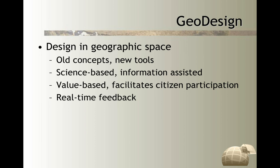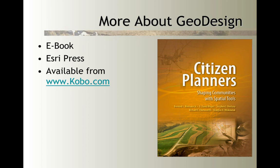With the use of geographic information systems and geodesign concepts, we can run different alternatives and see if it's even possible to protect farmland while adding 5,000 new citizens over the next 20 years with low-density scenarios. These geodesign tools are really good at providing real-time feedback to understand the consequences of decisions before they're actually implemented into ordinances on the landscape. I'm not going to talk exclusively about geodesign concepts today, but colleagues of mine and I have published a book through Esri Press called Citizen Planners: Shaping Communities with Spatial Tools, available as an e-book at cobo.com.